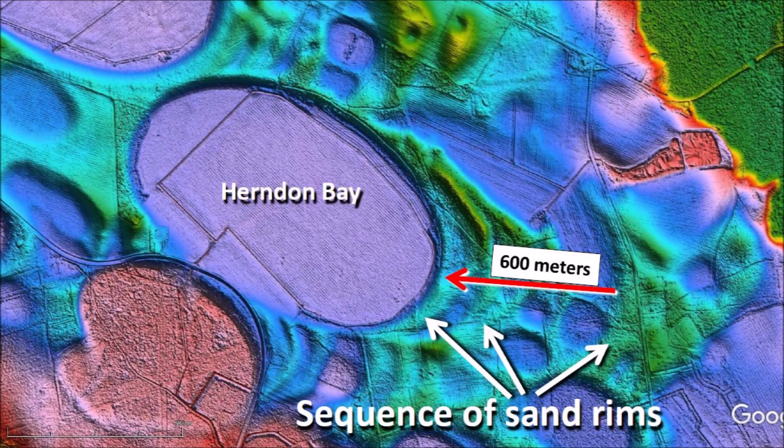This LiDAR image shows Herndon Bay and the sequence of sand rims which, according to the authors, were deposited from 37,000 to 27,000 years ago. The authors write that basin migration was punctuated by periods of stability and construction of a regressive sequence of sand rims, with basal muddy sands incorporated into the oldest rims.